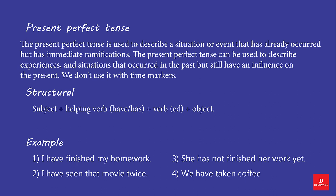Structure: Subject + Helping Verb (have/has) + Verb (past participle) + Object. Examples: I have finished my homework. I have seen that movie twice. She has not finished her work yet. We have taken coffee.